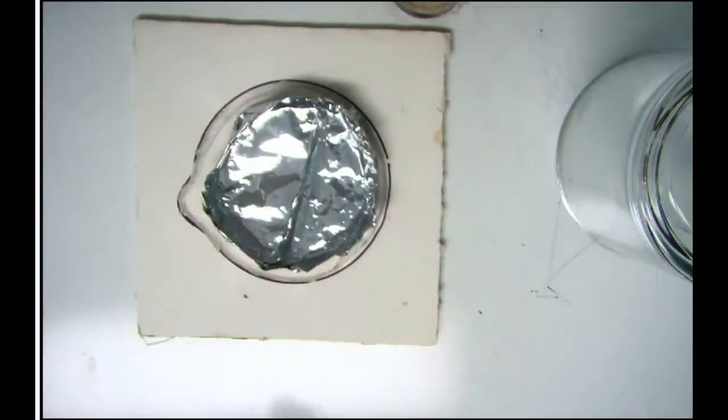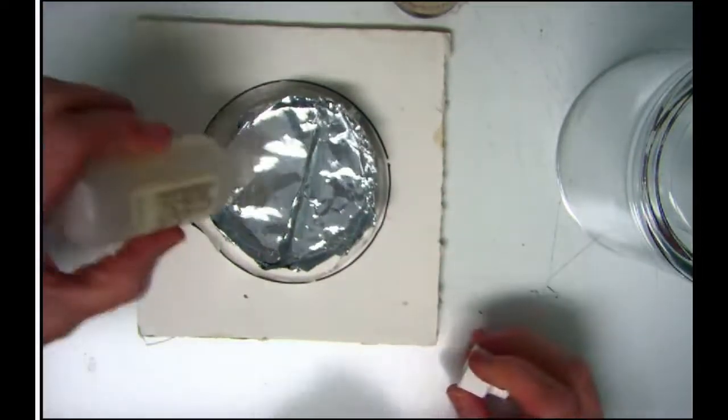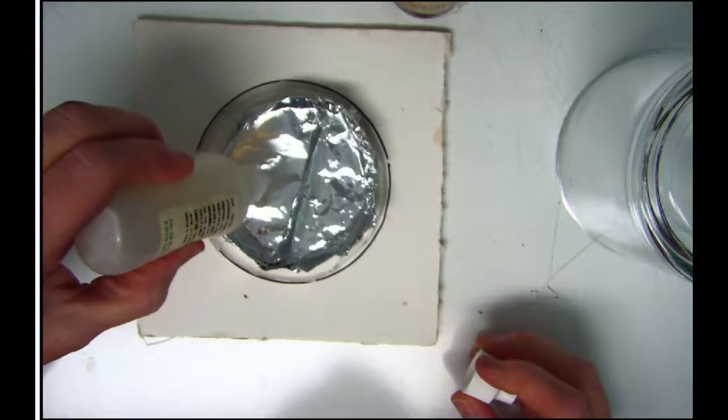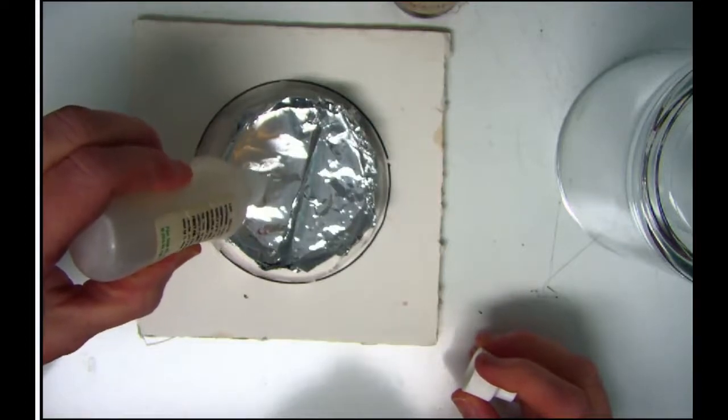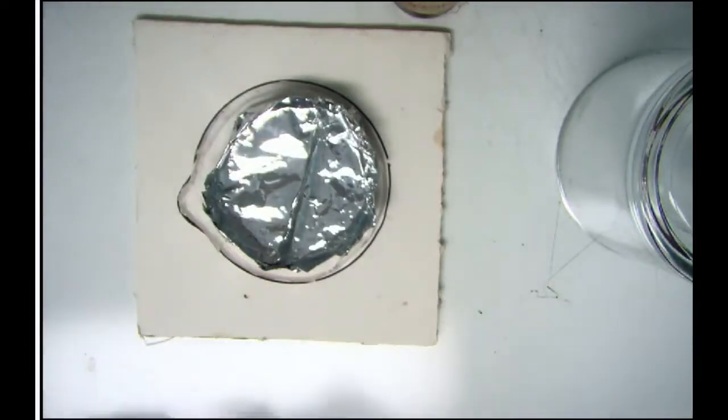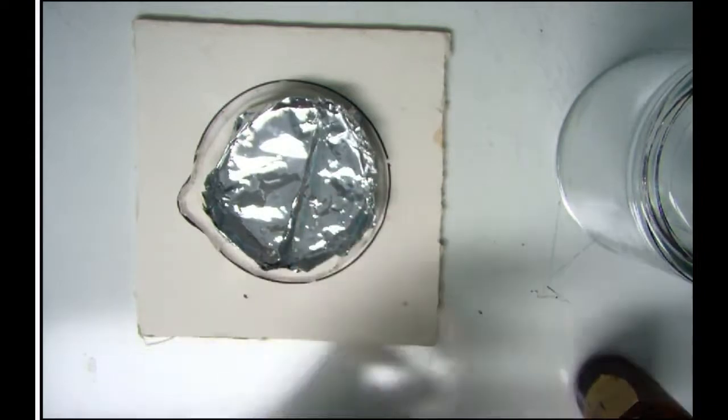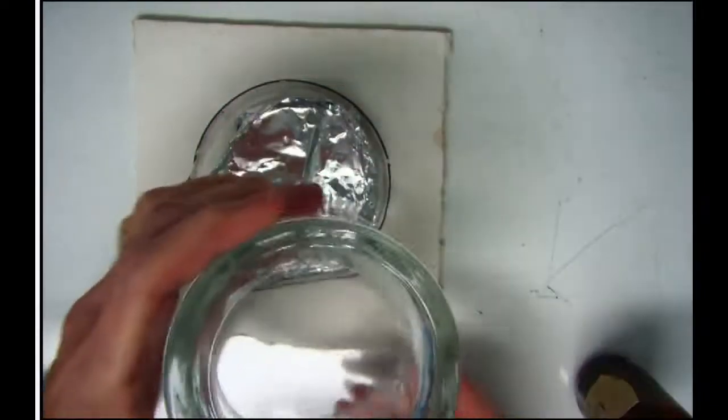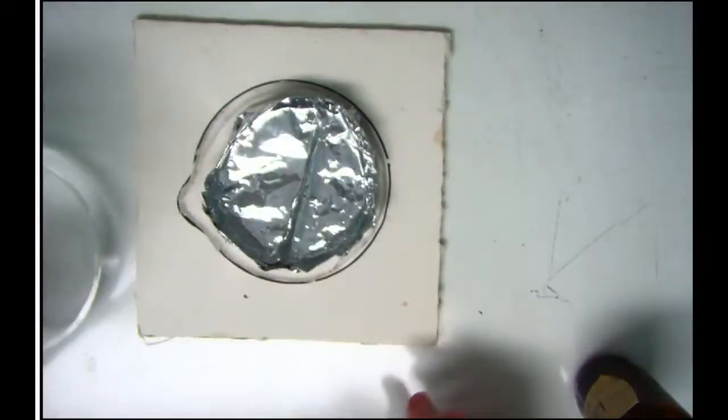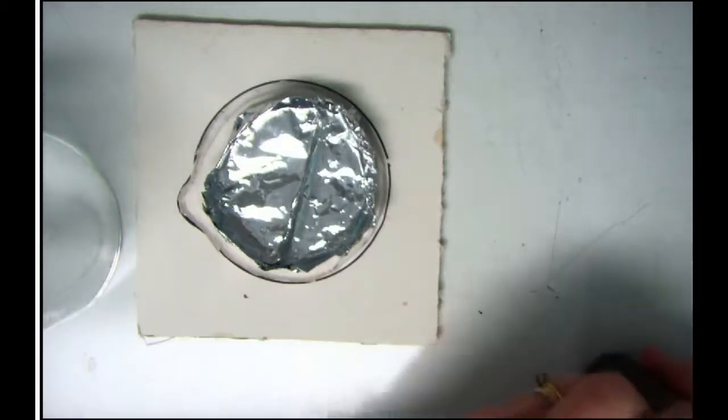All right. So what you're going to notice is that there is a few clear colored drops. You can't even see them there. And then there are going to be some clear colored drops that I'm going to put on this side. All right. As soon as I do that, I'm going to cover it with a glass jar, and you're just going to sit and watch what happens.